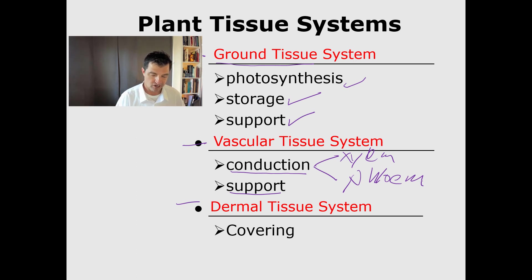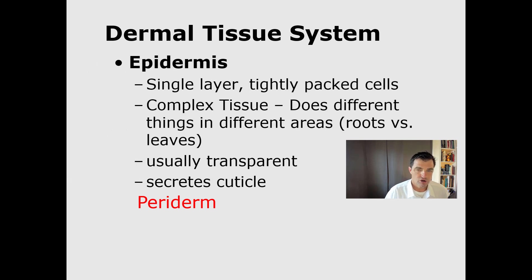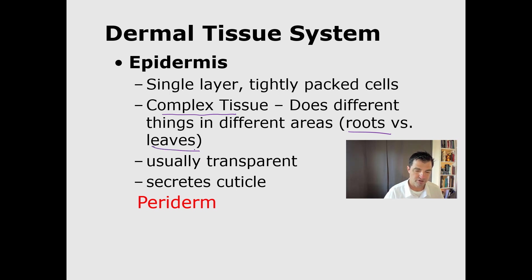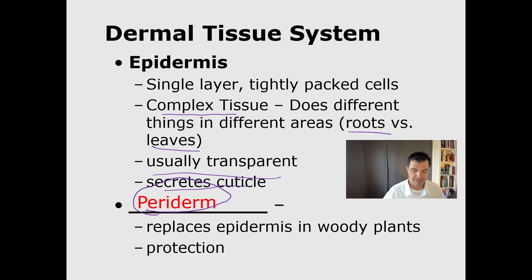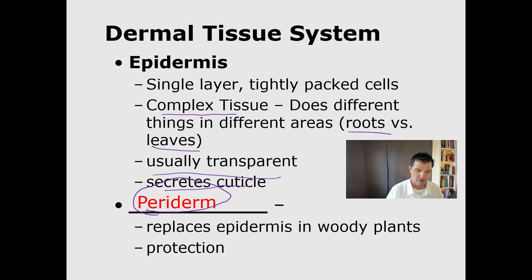Dermal tissue systems are like the covering — they're kind of like the skin. The epidermis is the outer layer, a tightly packed group of cells, and it's a complex tissue. It does different things depending on where you are; whether in a root or a leaf, there's epidermis in both, but it functions differently. It's usually transparent and secretes what's called the cuticle. For plants like trees that grow a hard outside shell, the epidermis is replaced by a tissue called the periderm, which is basically what you'd think of as bark.